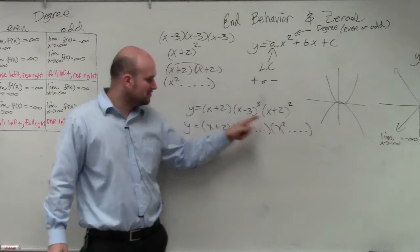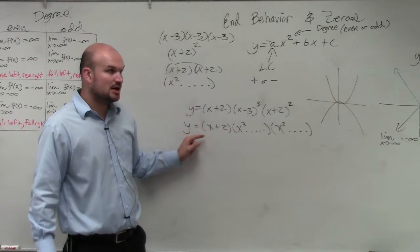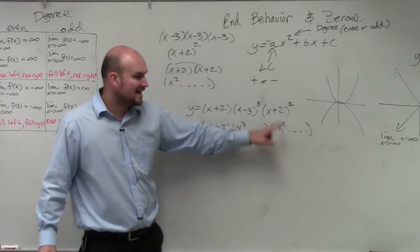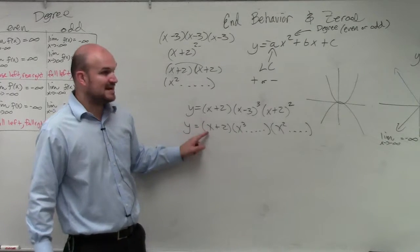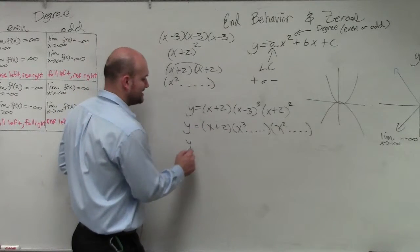Now, when I multiply all of these, what's the largest I'm going to get? I can't get anything higher than x squared times x cubed, which gives me x to the fifth times x, which will give me x to the sixth.